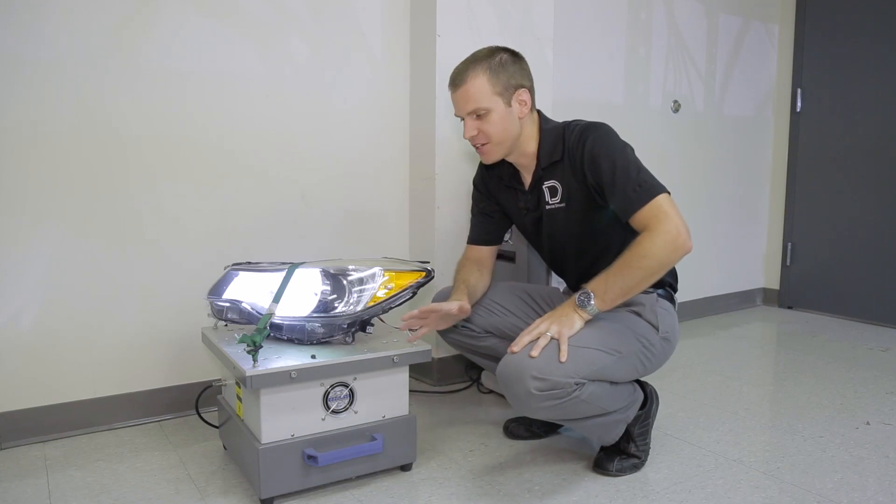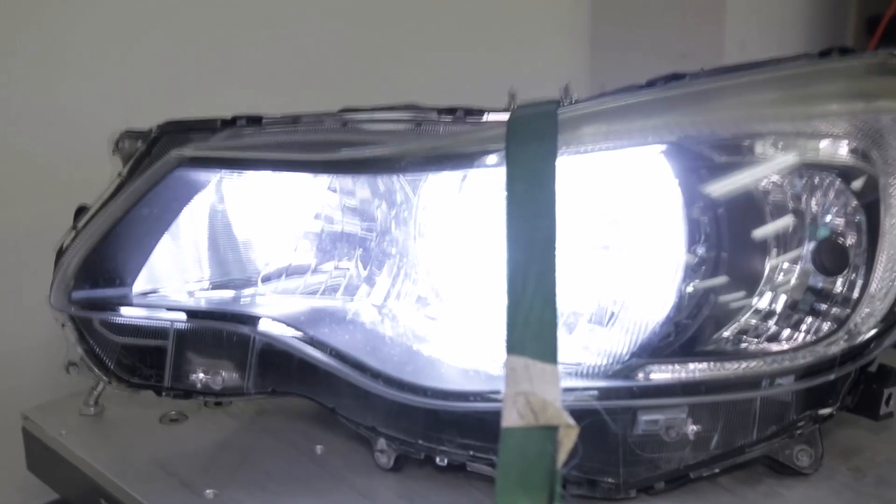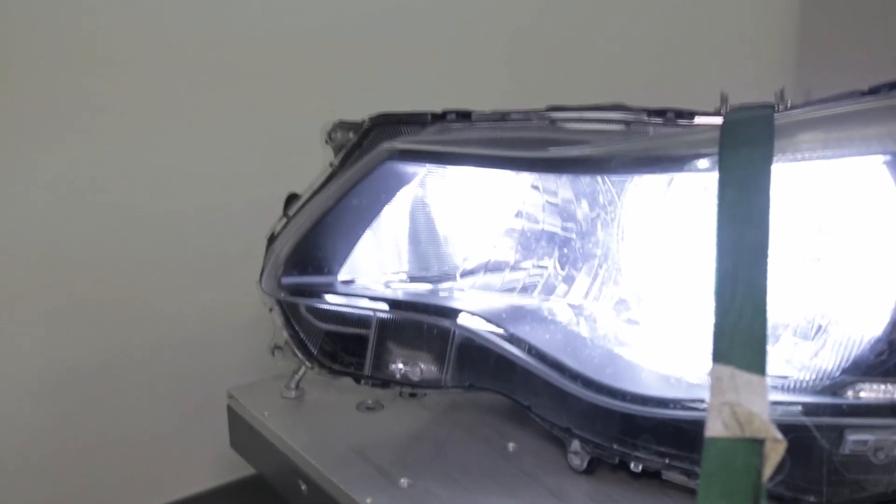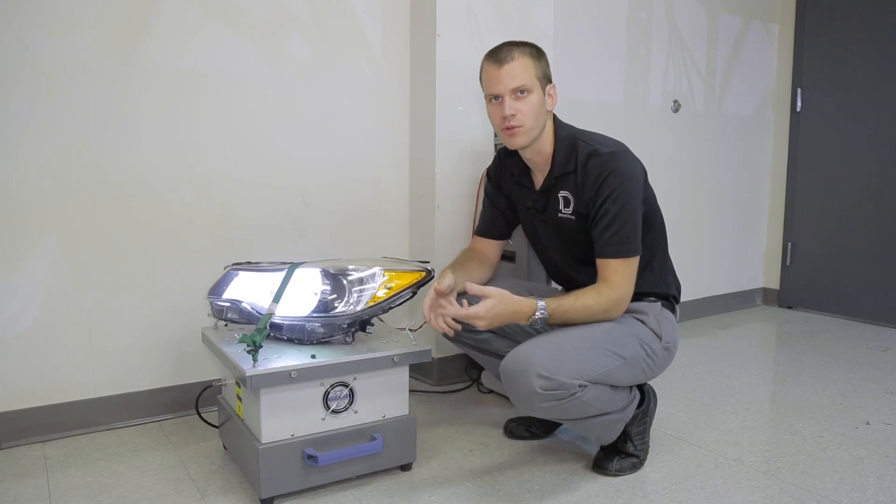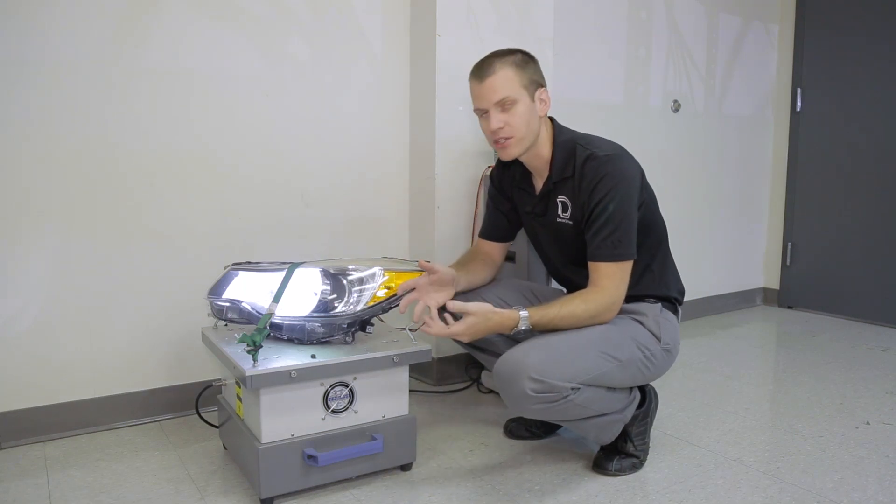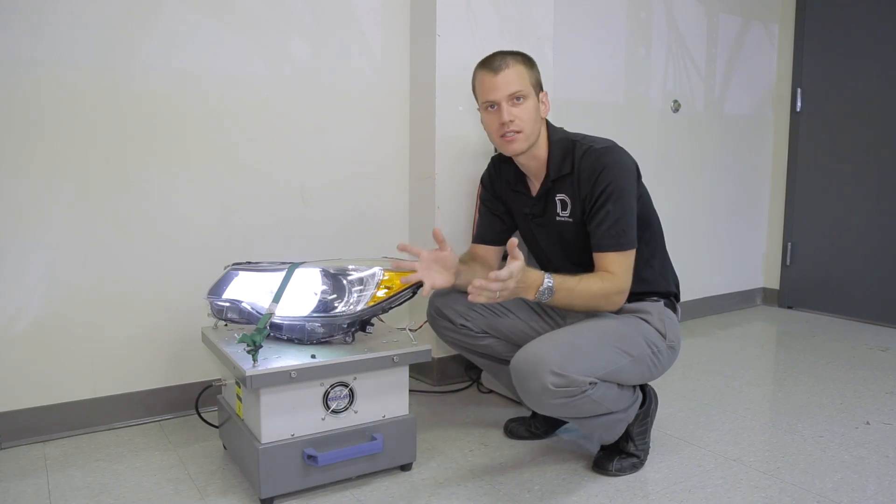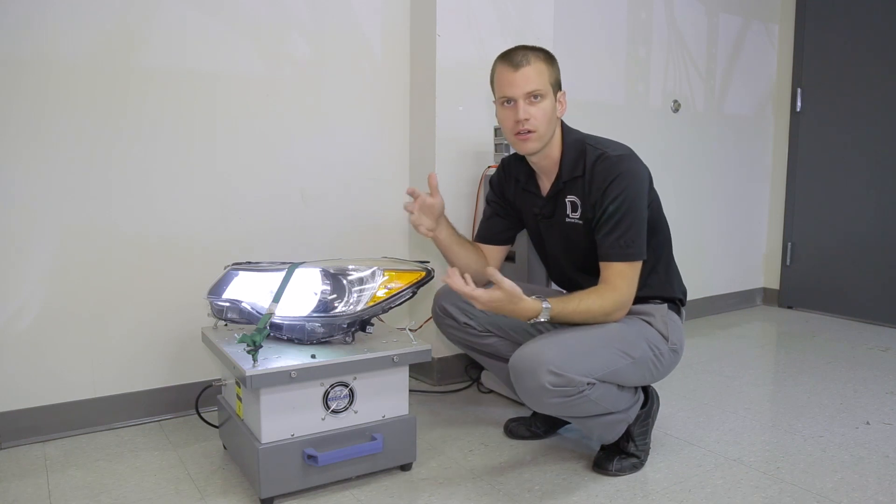All right, our next test that we do for everything is this vibration test. It's a little table here. You can hear it going. It's going to vibrate the heck out of this headlight that's on here. We've got an SL1 plugged into it and so when everything's mounted in the headlight, we want to simulate that on-road use, the vibration, and make sure that all of our screws, fasteners, everything holding it together is going to stay in place and not fall apart on the road.